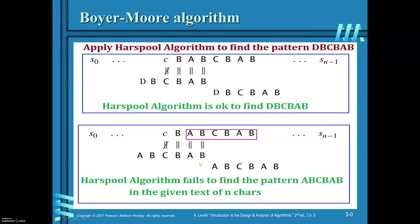But the same scenario when you apply for this pattern: C is not a character of the pattern here. Even though these two characters are being matched, you will be shifting by its entire length. So this is what the Horspool algorithm does — Horspool algorithm fails to find the pattern A, B, C, B, A, B even though it is there in the text.